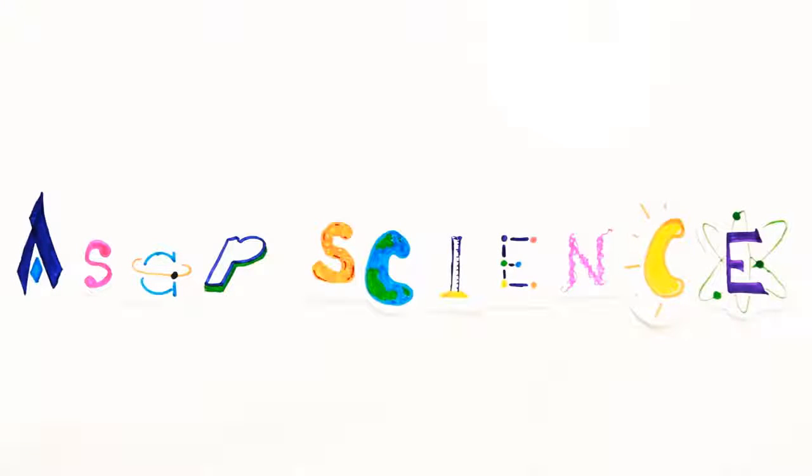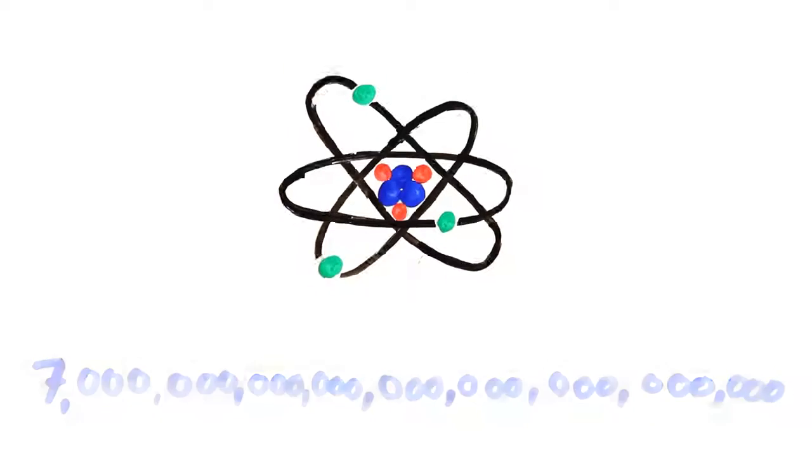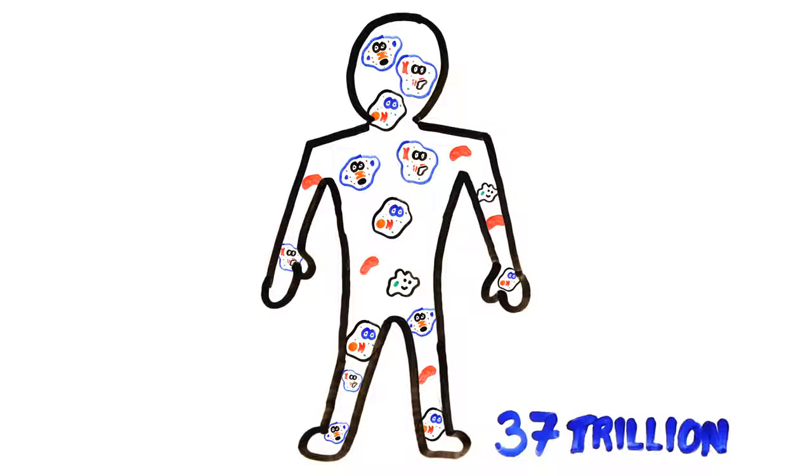Your body is made up of many atoms, around 7 octillion to be exact. These make up the 37 trillion cells in your body, which are actually much younger than you think.